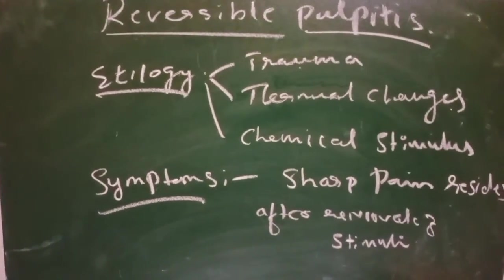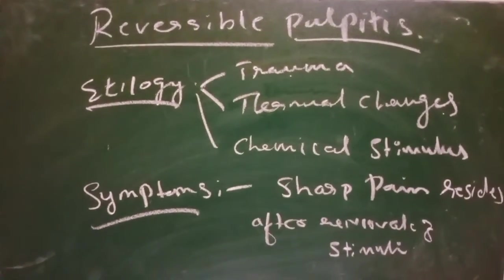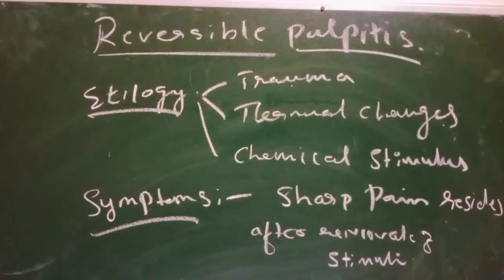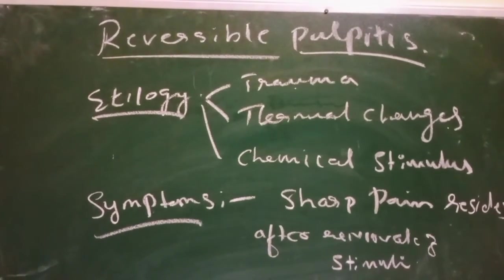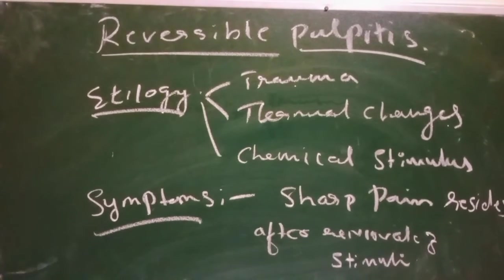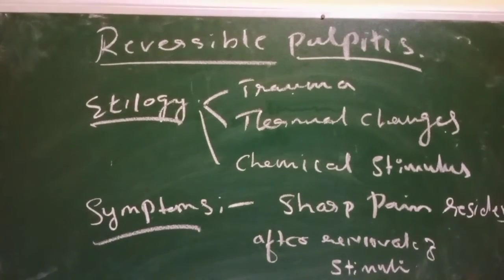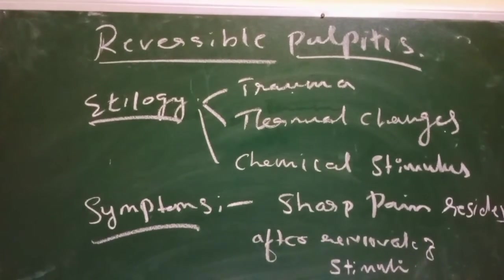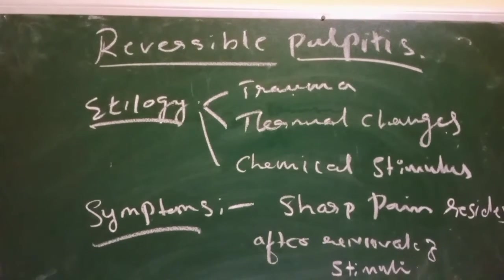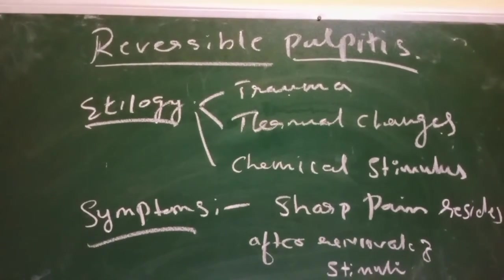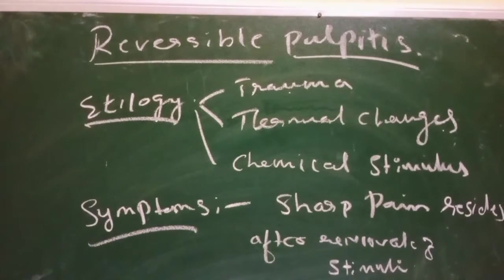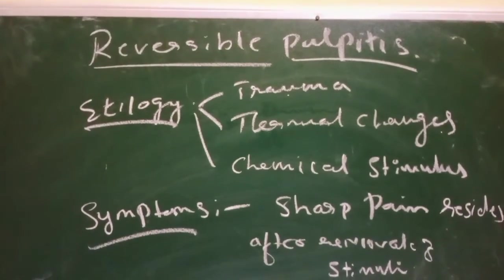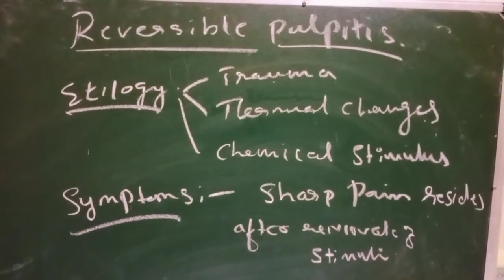The etiology of Reversible Pulpitis includes trauma, thermal injury, and chemical stimuli. Trauma includes accidental injury or occlusal trauma. Thermal injury occurs during tooth preparation without coolant, overheating during polishing of the restoration, or too long contact of the burr to the tooth. Chemical stimuli like sweet and sour foodstuffs mainly cause reversible pulpitis.